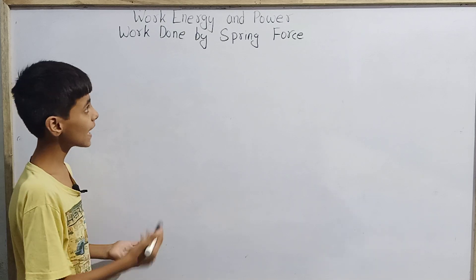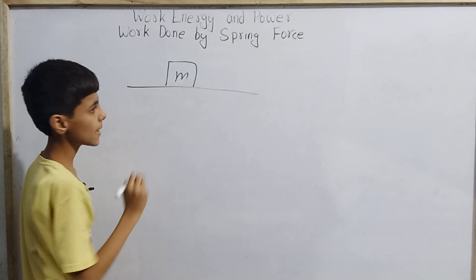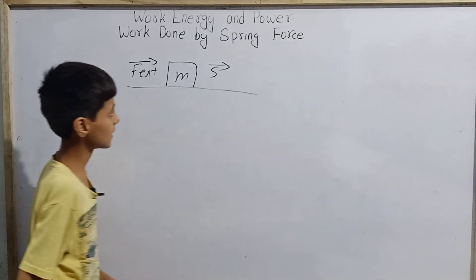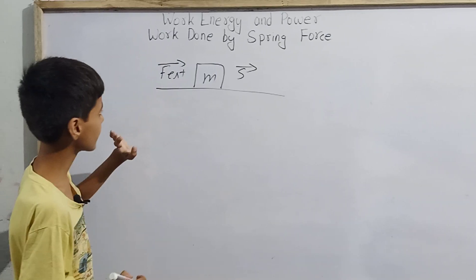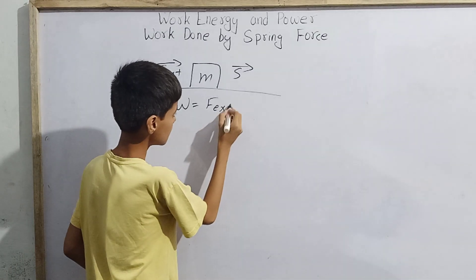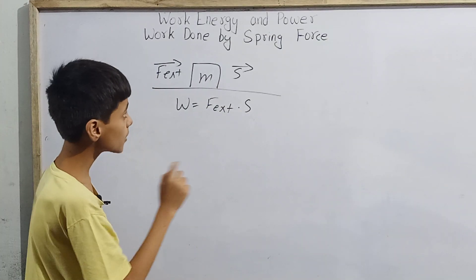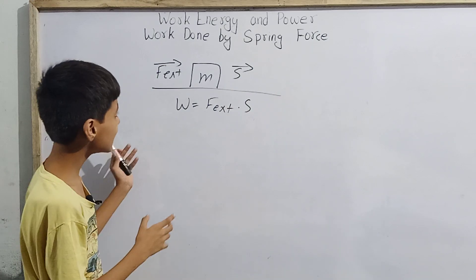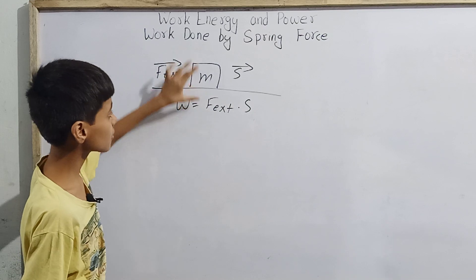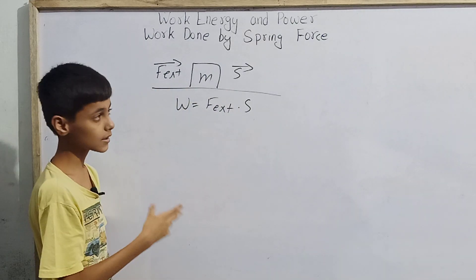Just like in our previous video, we looked at work done by any constant force or variable force. We had a block of mass m, and any external force F_external acts over this block. It has a displacement of magnitude s. So the work done by the external force is W = F_external · s. But this is work done by any external force — not gravity, not weight, not normal contact force — those we apply from external sides.